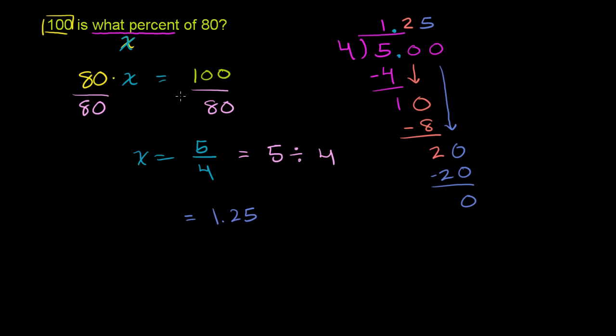So, so far, we could say 100 is 1.25 times 80, or 1.25 of 80. You could even say it, but we still haven't expressed it as a percentage. This is really just as a number, as a decimal, but it's a whole number and a decimal. It would be a mixed number if we didn't do it as a decimal. It's 1 and 1 fourth, or 1 and 25 hundredths, however you want to read it. So to write it as a percent,